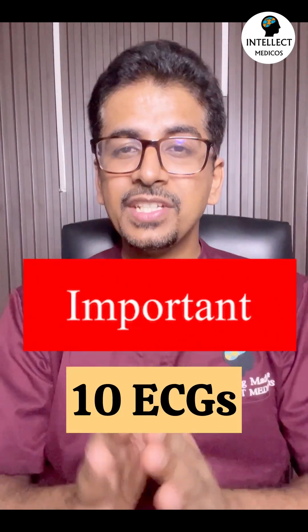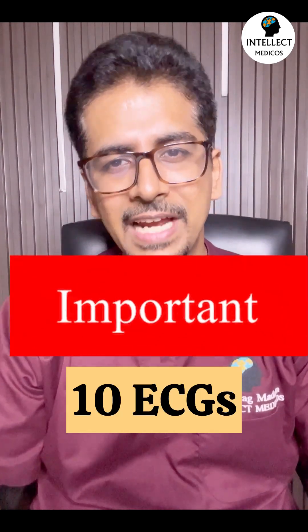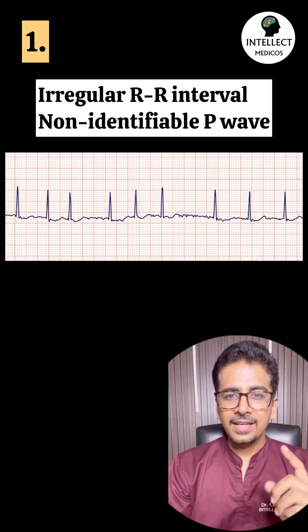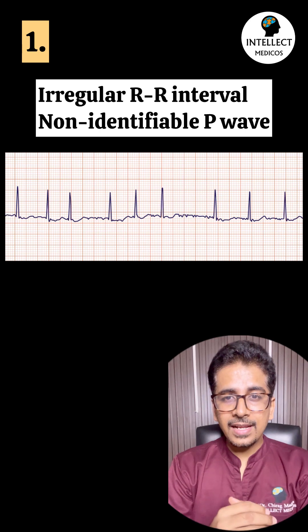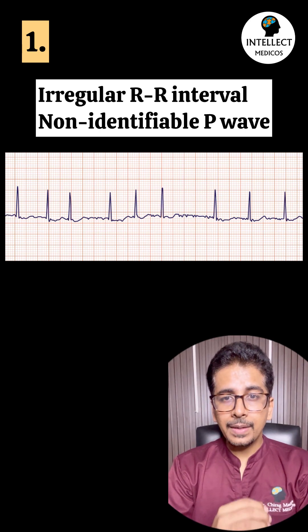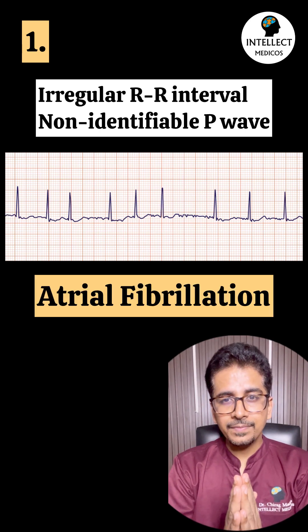These are the 10 ECGs which are very important for your clinical practice and for exams. First: irregular RR interval with non-identifiable P-wave. This is atrial fibrillation.